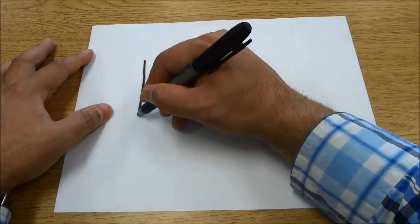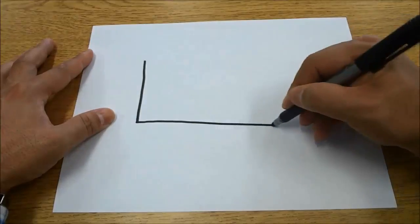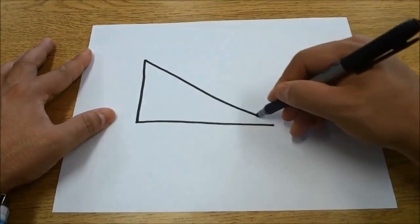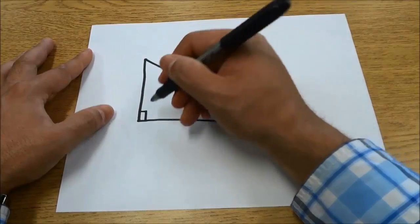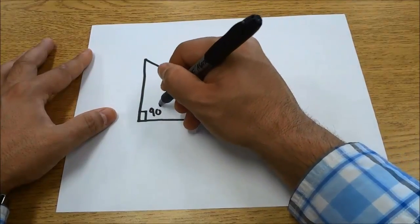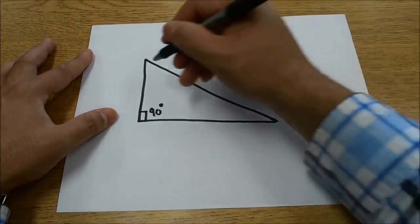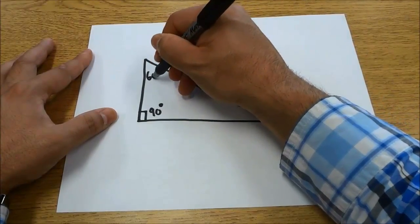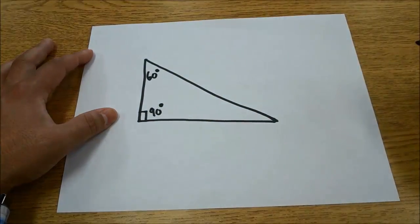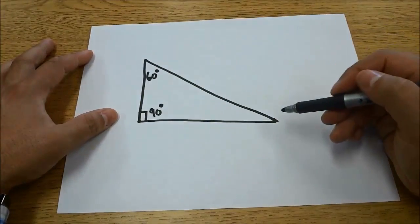Let's imagine we have a triangle like this. Let's say this angle right here is 90 degrees and this angle up here is 60 degrees. So basically we know two of the three angles.